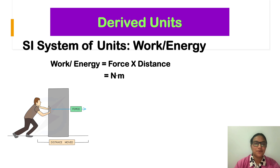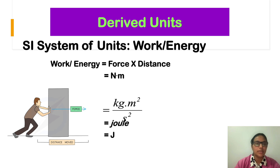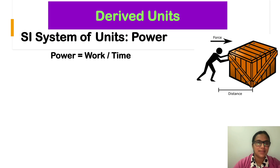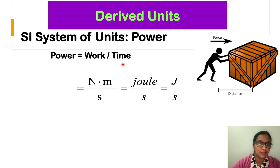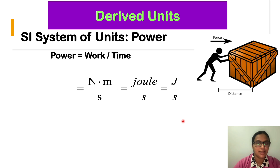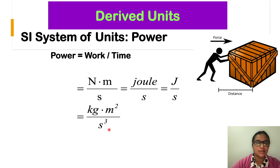The unit kilogram meter per second squared is also equal to newton, represented by N, or equivalent to joule per meter. Power is work per unit time. Work is newton meter divided by time in seconds, giving joule per second. This can also be written as kilogram meter squared per second cubed, or equivalently as watt, represented by W.